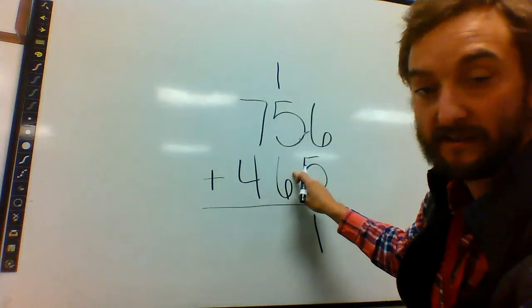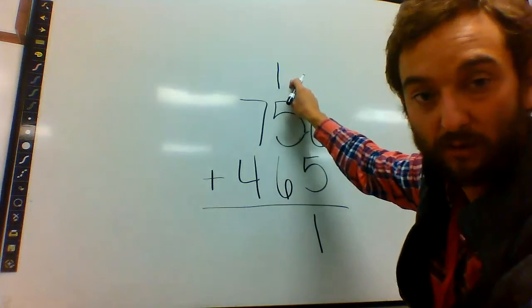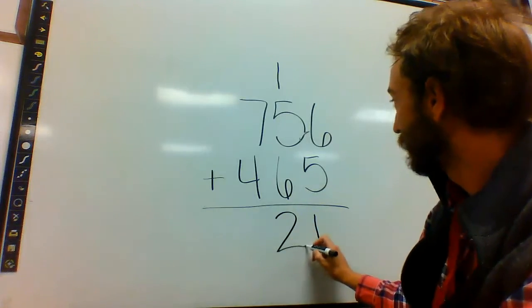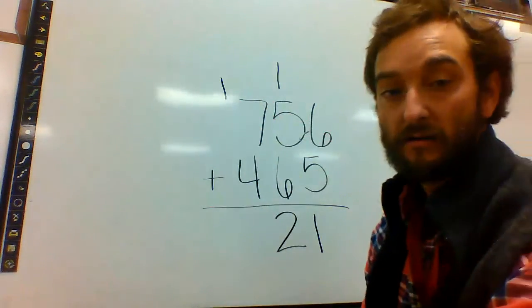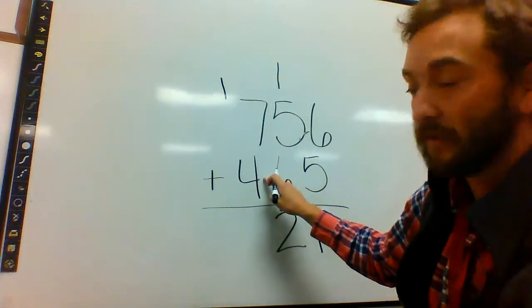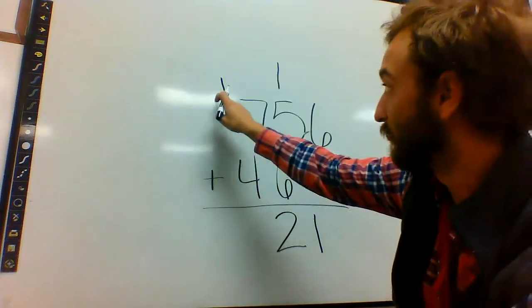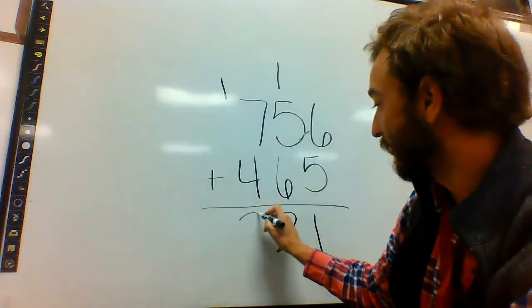5 plus 6 is 11. Plus 1 more is 12. Drop the 2. Carry the 1. 7 plus 4 is 11. Plus 1 more is 12. Drop that 12 straight down.